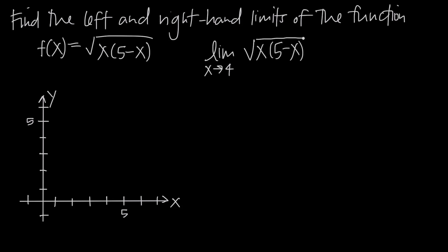We want to take the limit of this function as x goes to 4. When you see this written without any modifier, we're talking about the general limit as x approaches 4. But that's different from the left-hand limit and the right-hand limit. For the left-hand limit as x goes to 4, we write a small negative sign as a superscript on the 4, indicating we're approaching 4 from the negative or left-hand side.